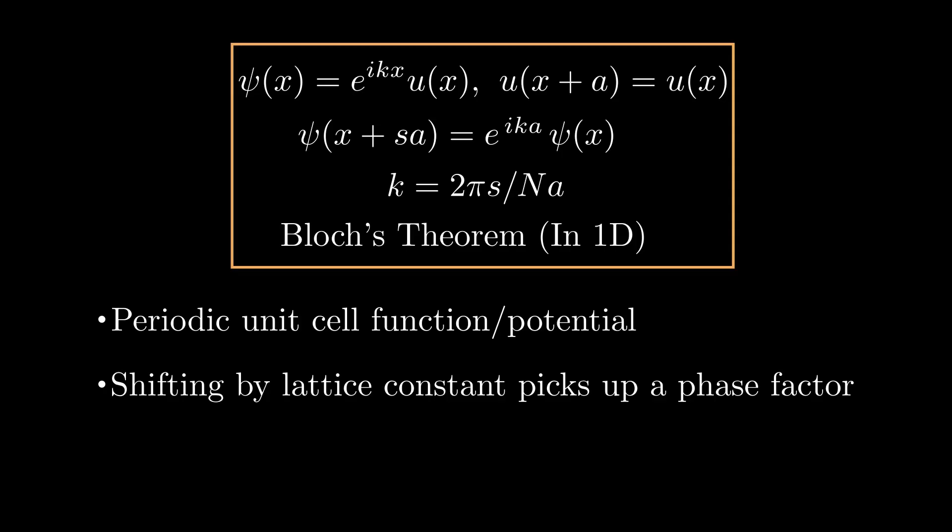And finally, something you might have noticed is that this k number that I've written up here has a striking resemblance with the k when you write a sinusoidal plane wave, that is 2 pi over lambda. In fact, this k and that k are very related. And we'll talk about how this k is related to what we call the crystal momentum, along with what's referred to as reciprocal space in the sequel to this video.